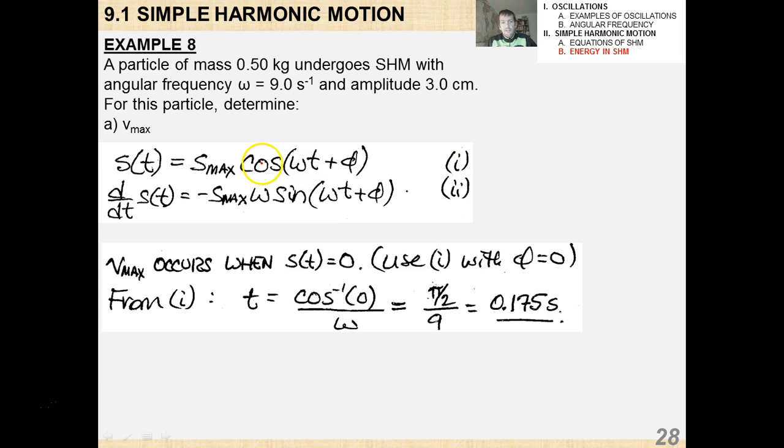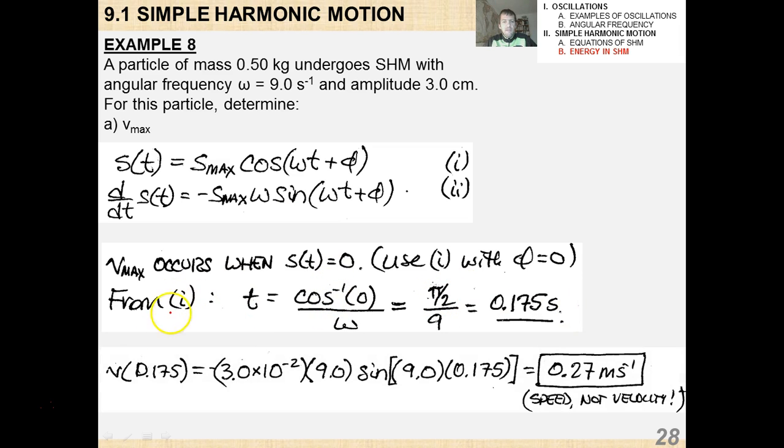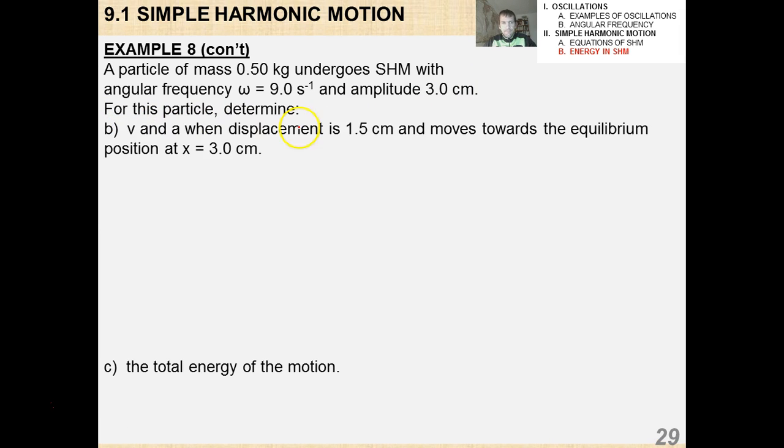So from equation 1, I get that I solve for t using the inverse cosine function, 0.175 seconds, and then I just find v by plugging in that time, and I get that it's 0.27 meters per second. And the question is asking the maximum speed, not the maximum velocity. So you want to take the absolute value because that's what they're asking right here.